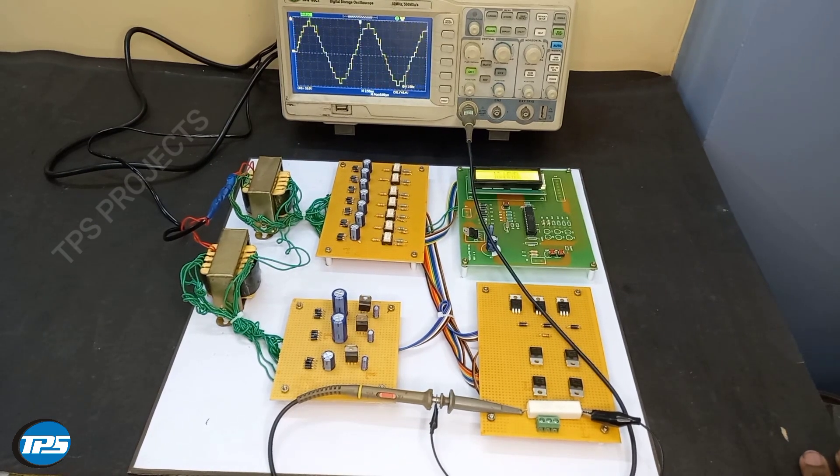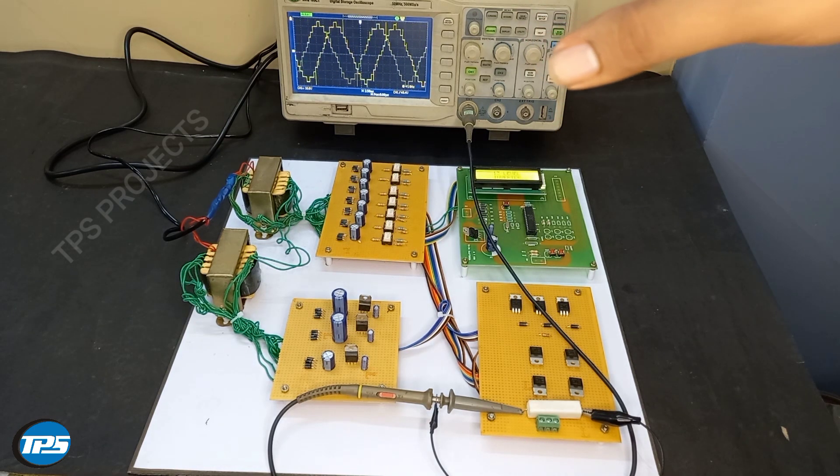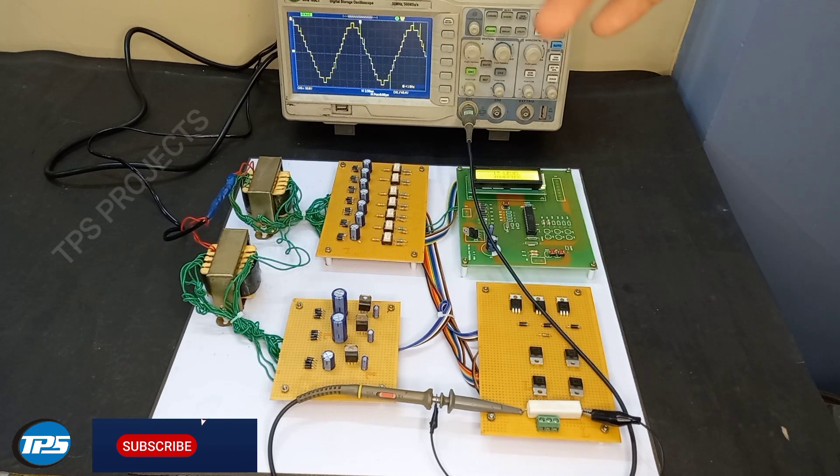As the pulses are developed by the lookup table method, the pulses are sent to the driver circuit. The driver circuit amplifies the 5 volt pulses into 12 volt and it also isolates the pulses from the DC supply.